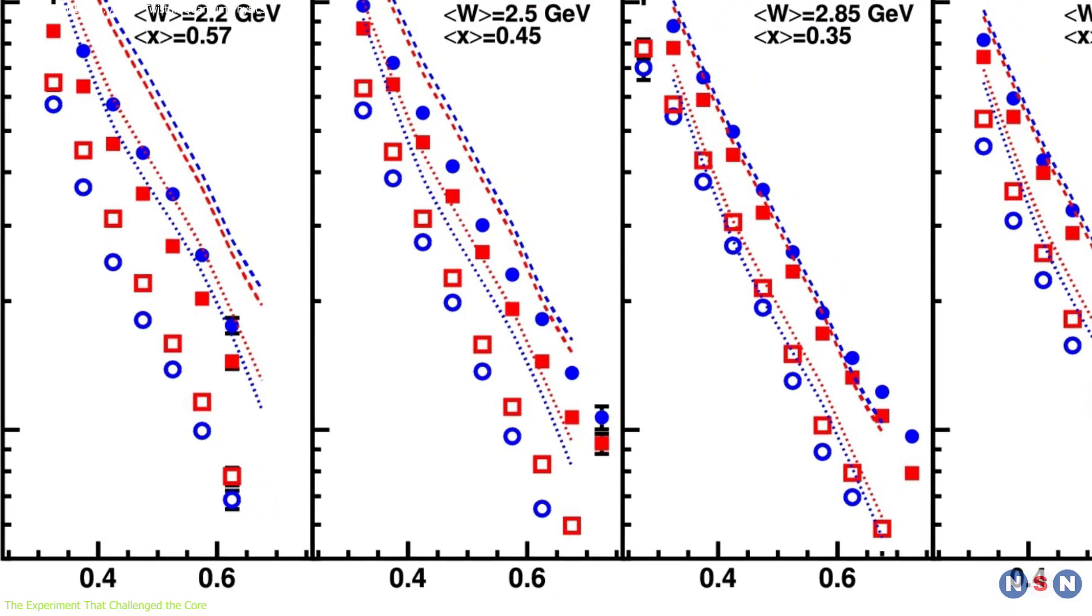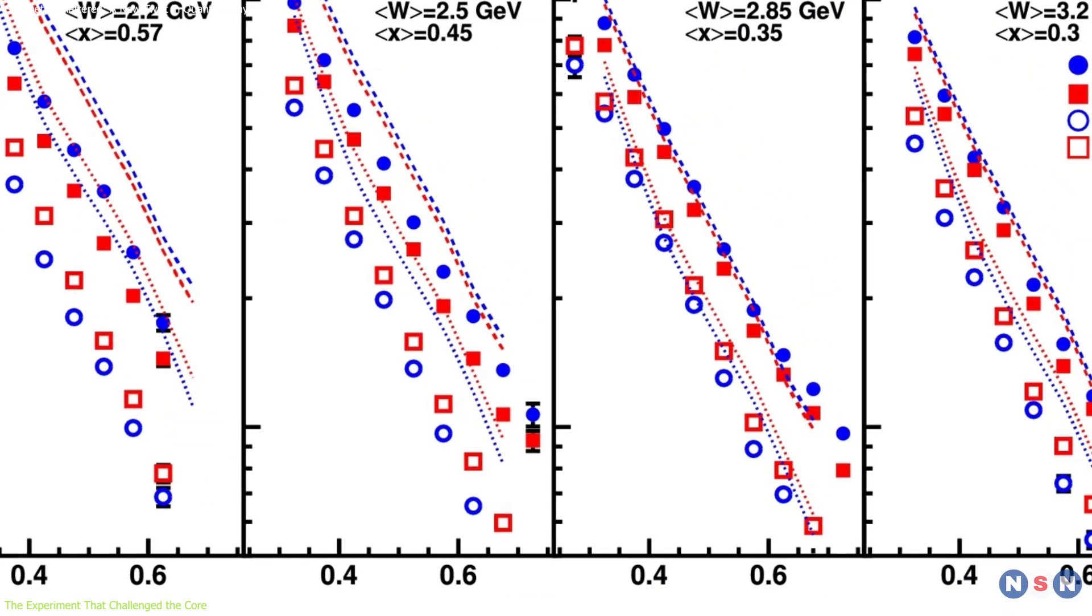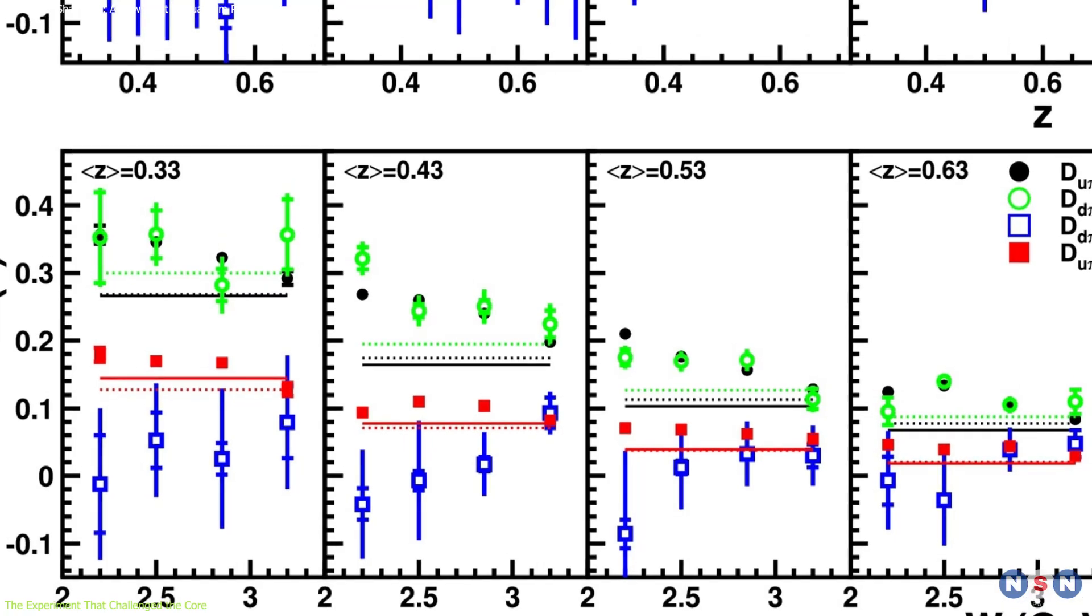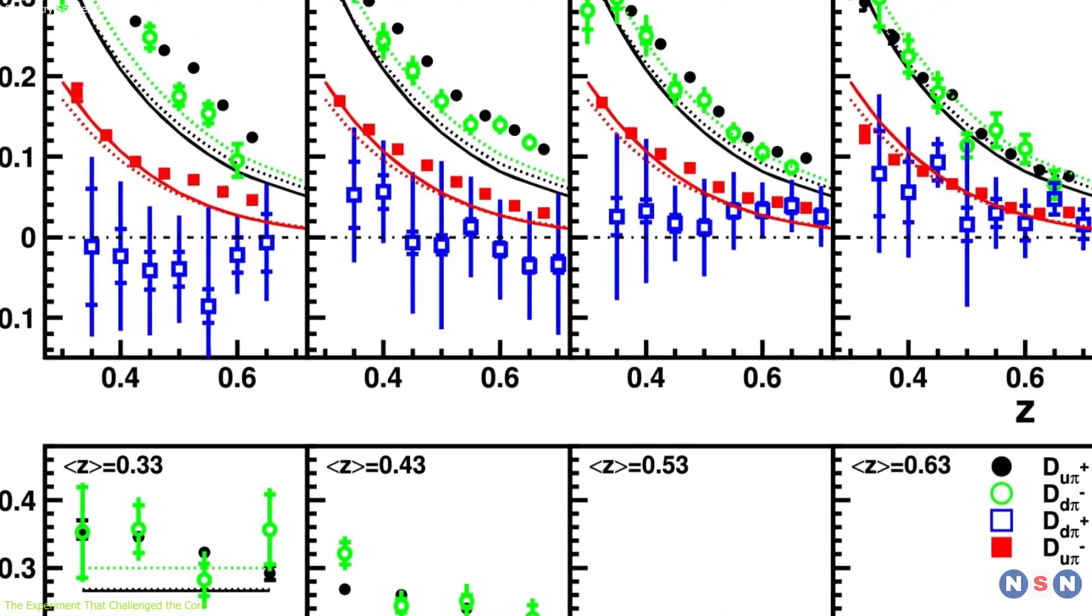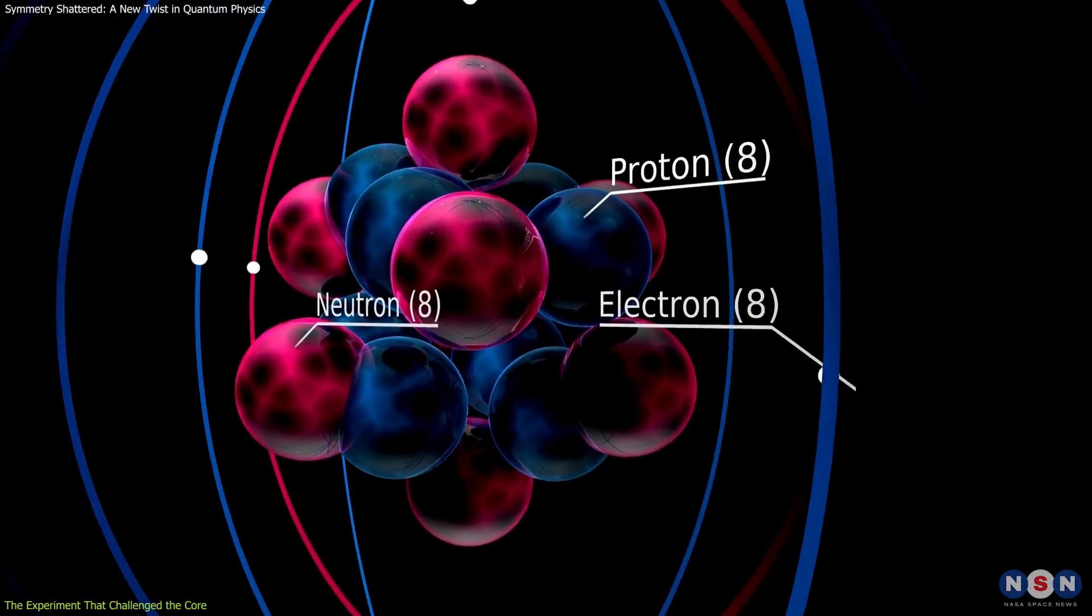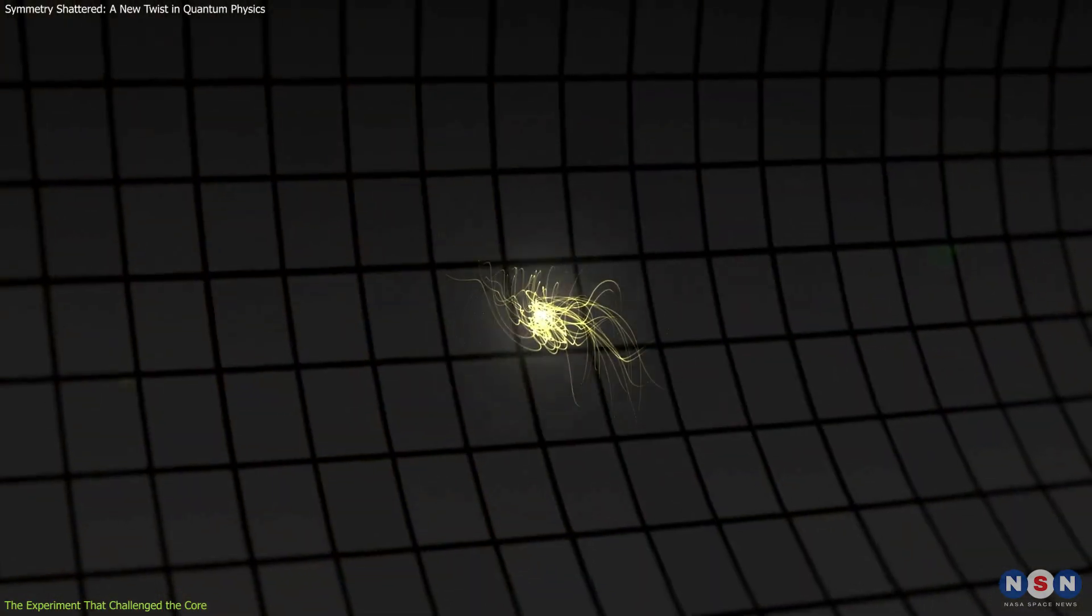The researchers measured the production rates of positively and negatively charged pions resulting from the fragmentation of different quark flavors, up and down quarks, from both protons and deuterons. What they found was unexpected.